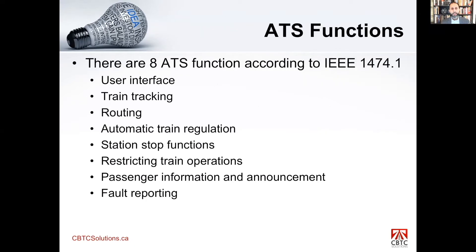The ATS has eight functions according to IEEE 1474.1. They are: user interface, train tracking, routing, automatic train regulation, station stop, restricting train operations, passenger information and announcement systems, and fault reporting.